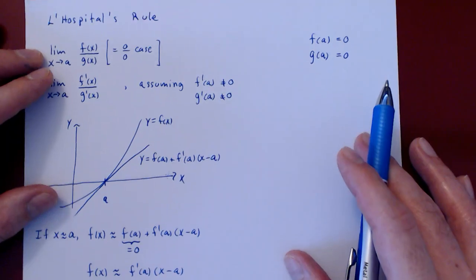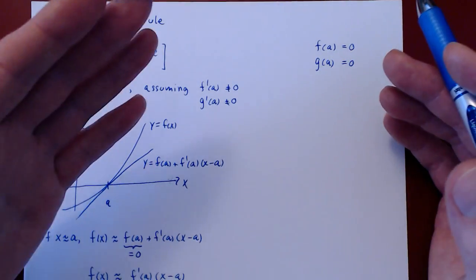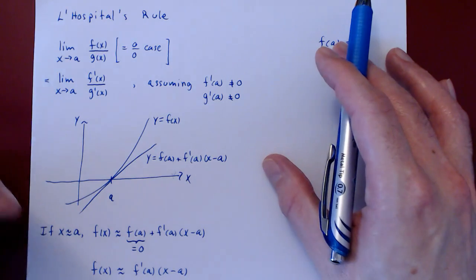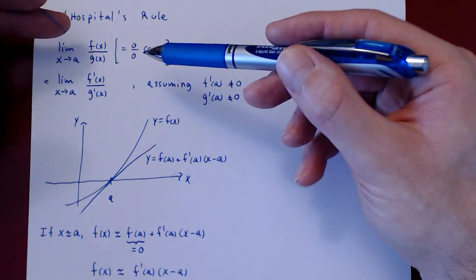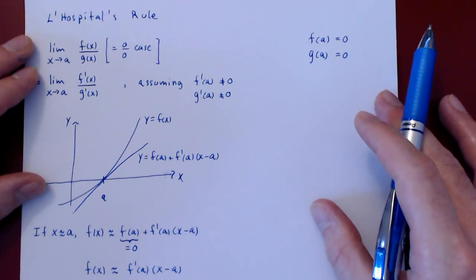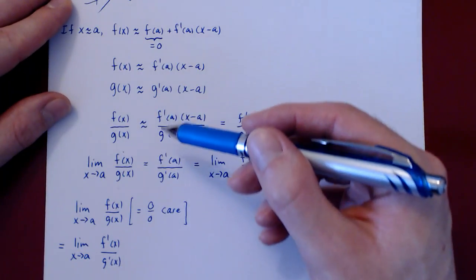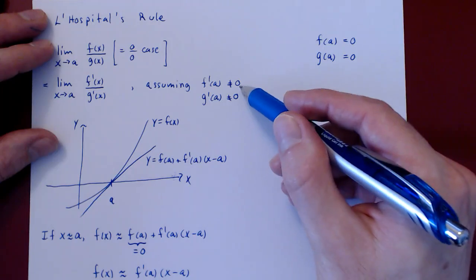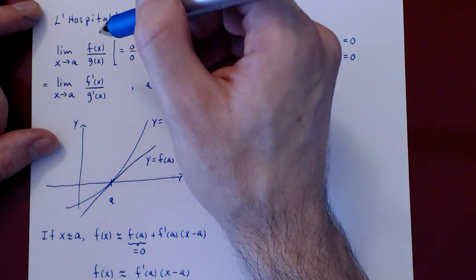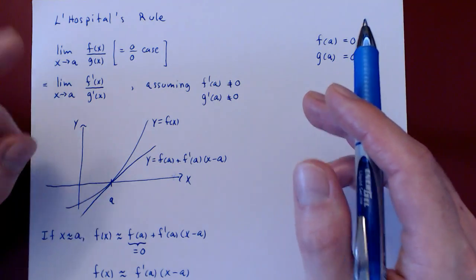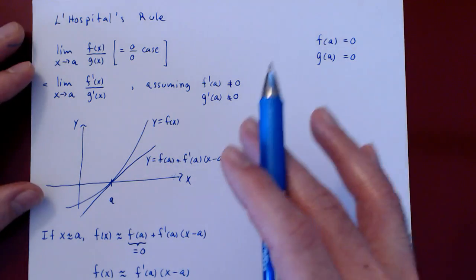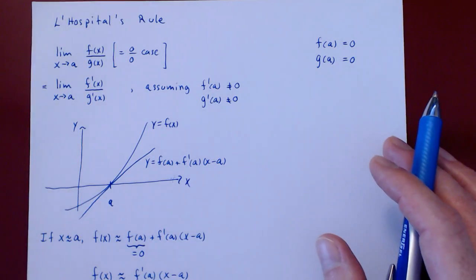To prove this, we will need to take a detour to look at two fundamental results: namely the mean value theorem and Cauchy's mean value theorem. You can see that intuitively, L'Hopital's rule in the zero over zero case fundamentally boils down to an application of linear approximation. Hopefully this makes the result very intuitive. But to prove we don't need the additional assumption — that all we need is for the limit to exist — we will need the mean value theorem and Cauchy's mean value theorem of differentiation, which we will cover in the next two videos.